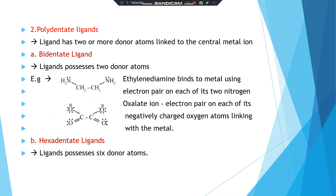Polydentate ligands have two or more donor atoms linked to the central metal ion. For example, ethylenediamine and oxalate ions each possess two donor atoms — these are bidentate ligands. Ethylenediamine binds to the metal using the electron pair on each of its two nitrogen atoms. In oxalate ion, the electron pair of each of its negatively charged oxygen atoms links with the metal.